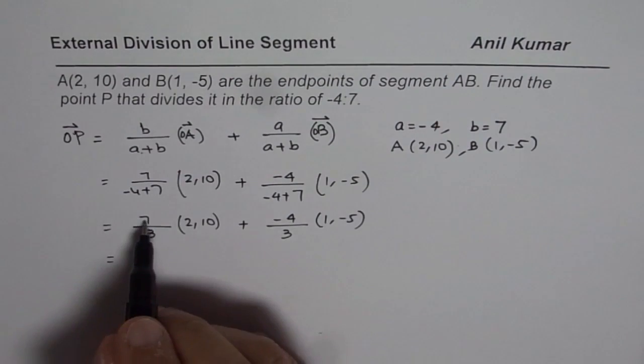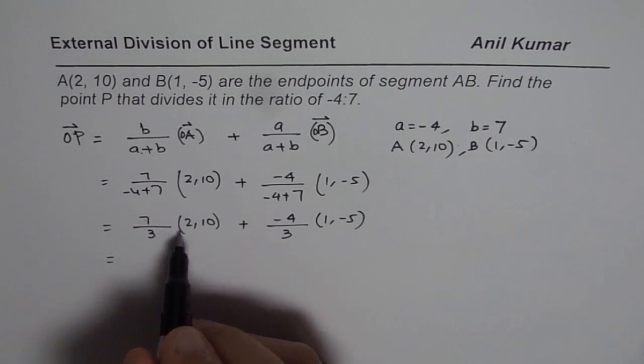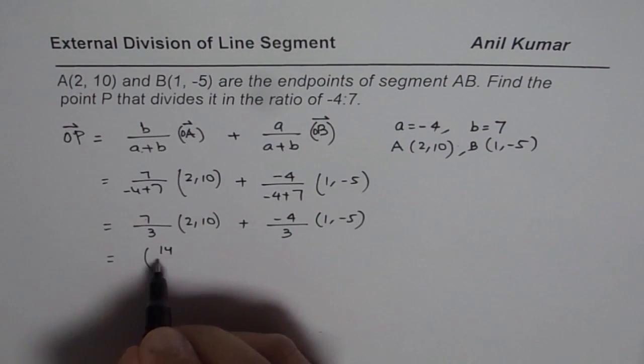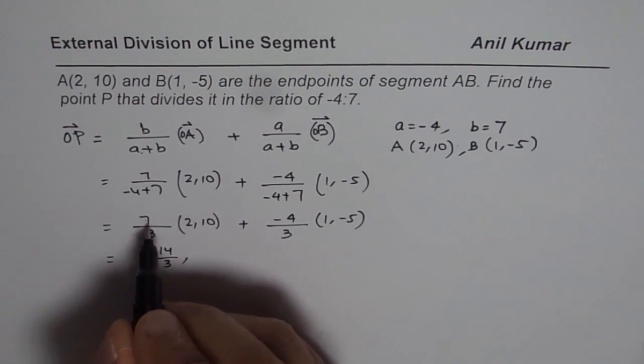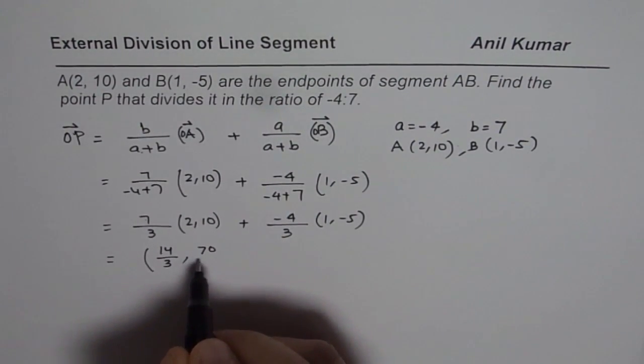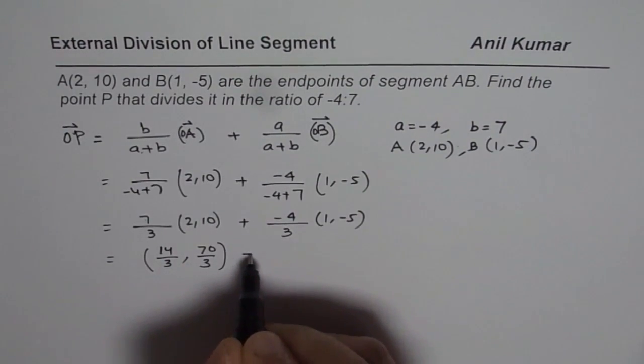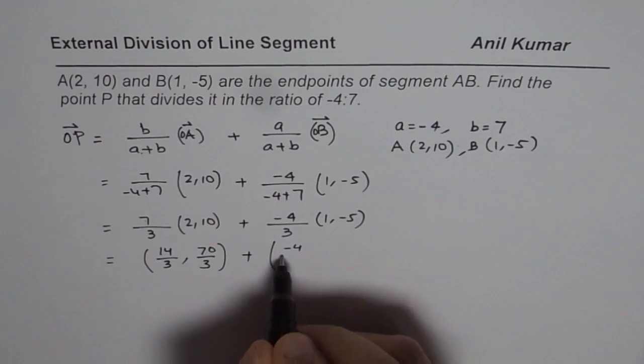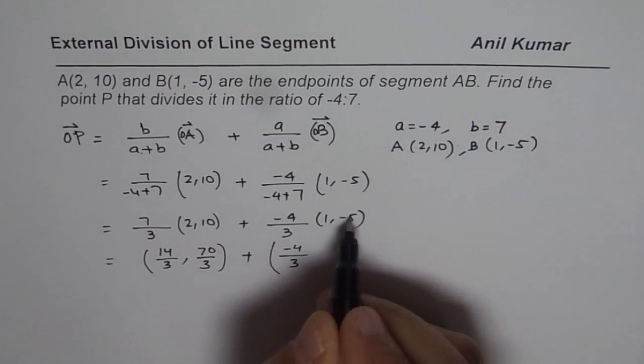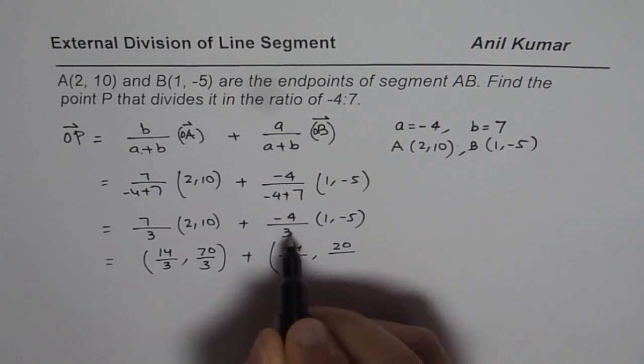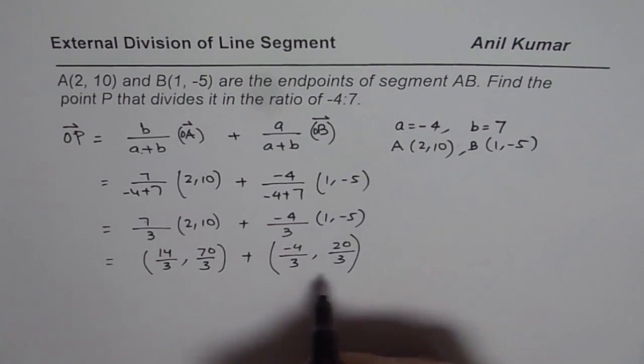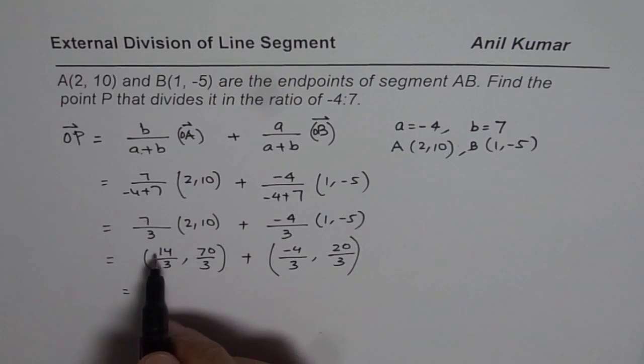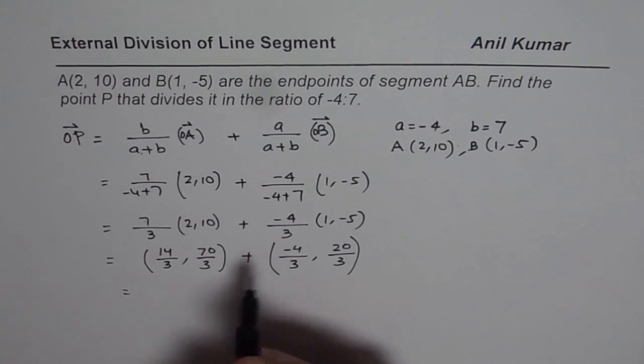So that gives us 7 times 2 which is 14. So we could write this point as 14 over 3 comma 7 times 10 is 70, 70 over 3, plus the coordinate points as -4 over 3. And when you multiply this you get plus 20 over 3. So you are adding the coordinate points.